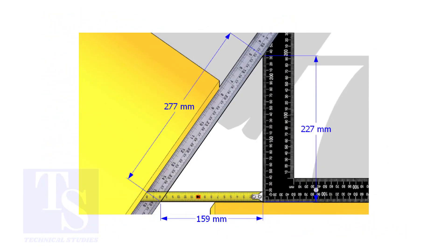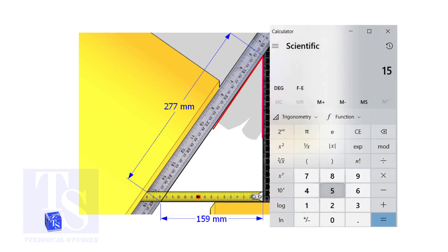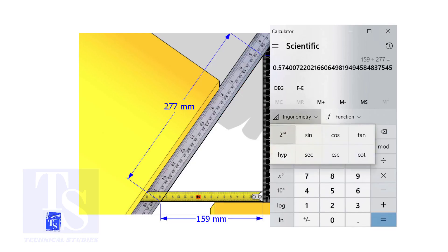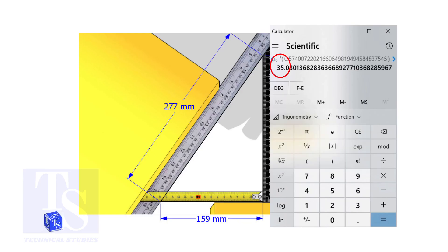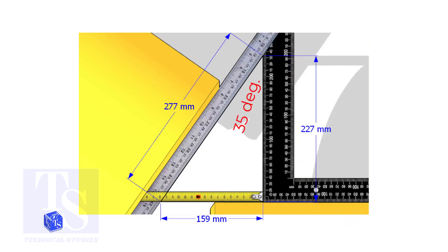Let us calculate the including angle. If you apply the sine rule, the angle will be 159 divided by 277 shift sine. So, the answer is 35 degrees.